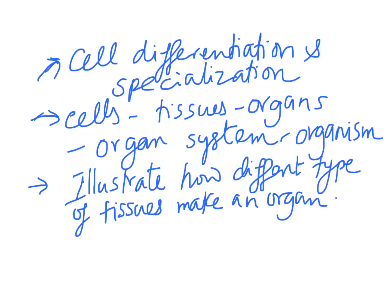You should be able to describe what cell differentiation means: as an organism grows, cells differentiate and specialize to different functions. You should also be able to describe how an organism is made up of building blocks starting from cells, which form tissues, then organs, then organ systems, all functioning together as an organism. You should also be able to describe how different types of tissues make an organ, with the stomach as a specific example.